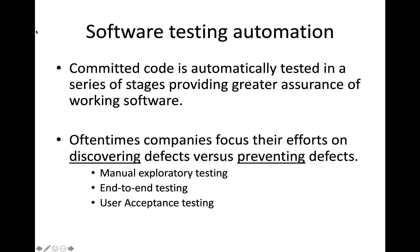One of the challenges that companies face is how to automate the testing of their software code. This tends to be the most challenging and oftentimes most inefficient part of the software delivery process. One of the problems companies face when they're performing testing is that they're testing the wrong way — focusing their testing efforts on trying to discover defects versus preventing those defects from getting into the software delivery pipeline in the first place.